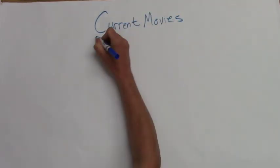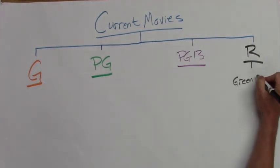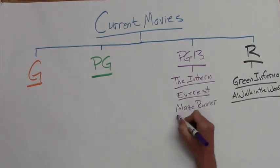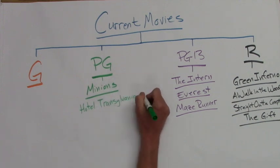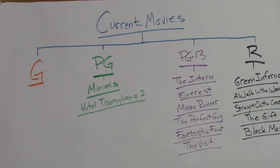Or let's say you look at the movie listings and complain that there's not much out for kids these days, but your mom says no, there's plenty. You could map it out on a tree map, classifying the movies by the ratings to prove your point. See? Mostly PG-13 and R-rated movies. No fair!